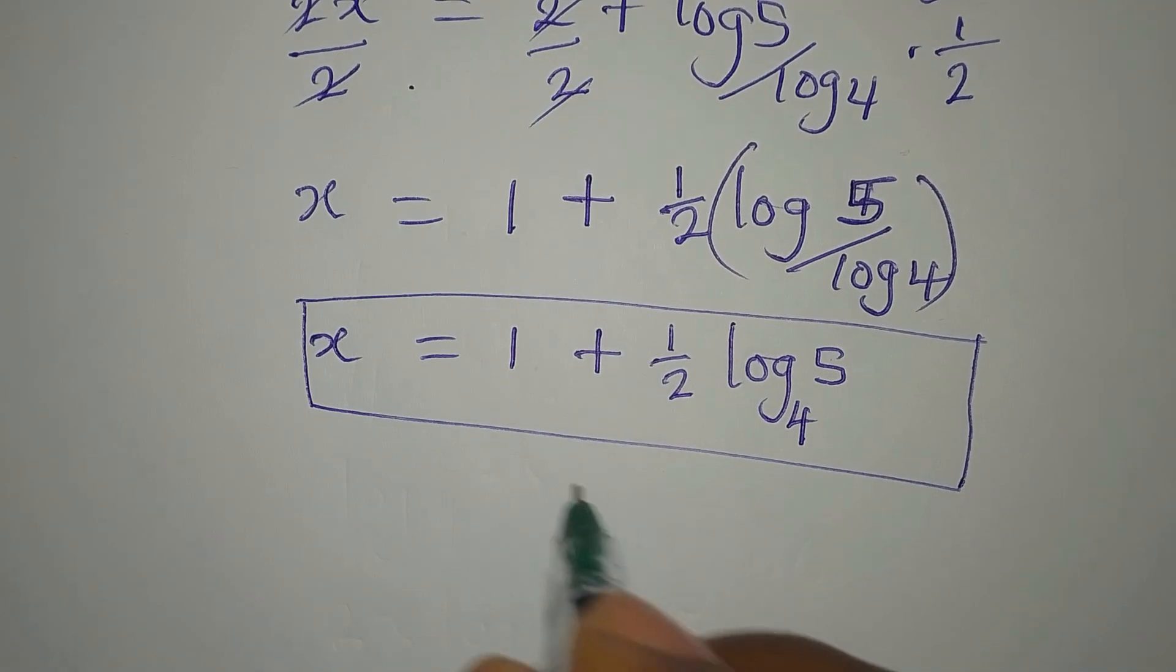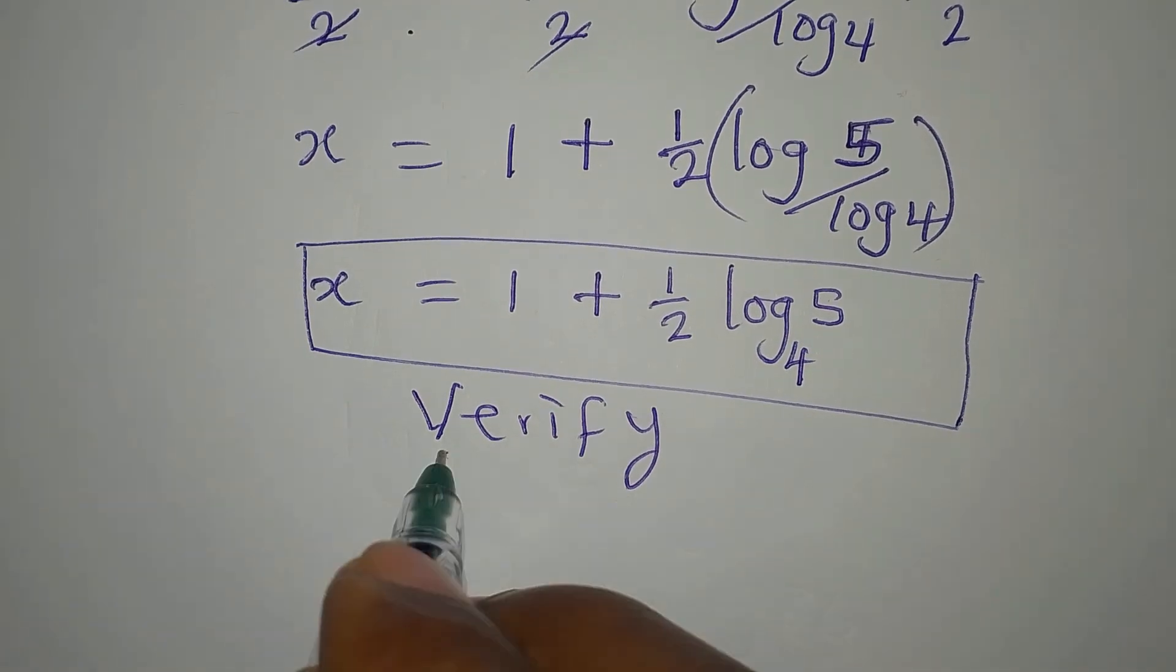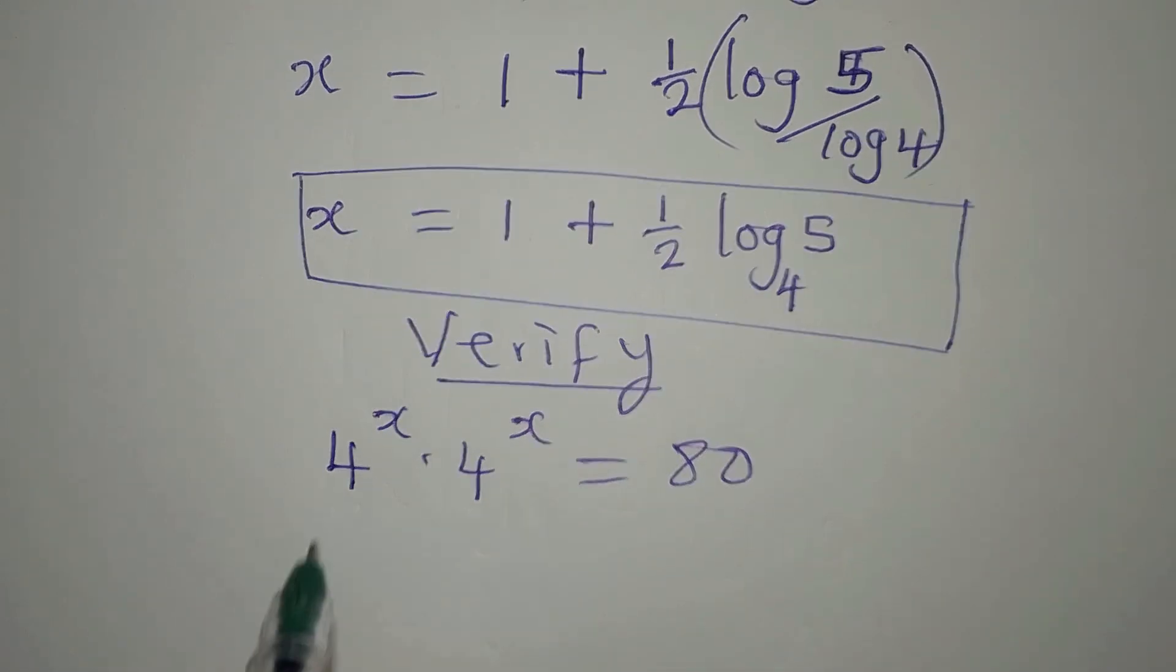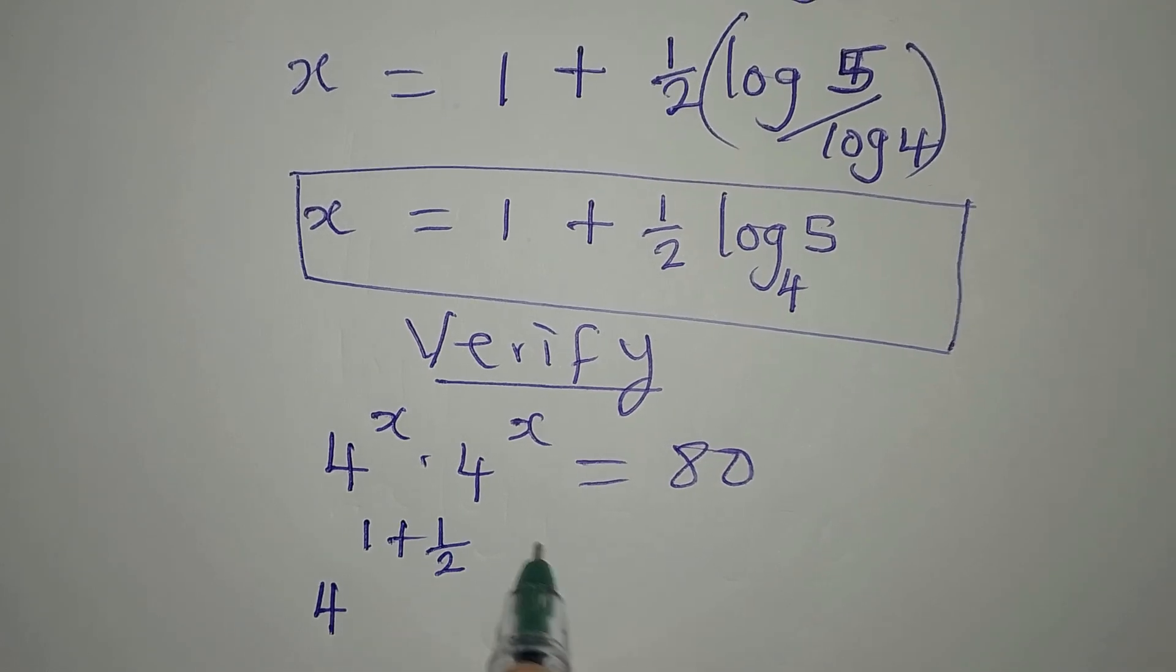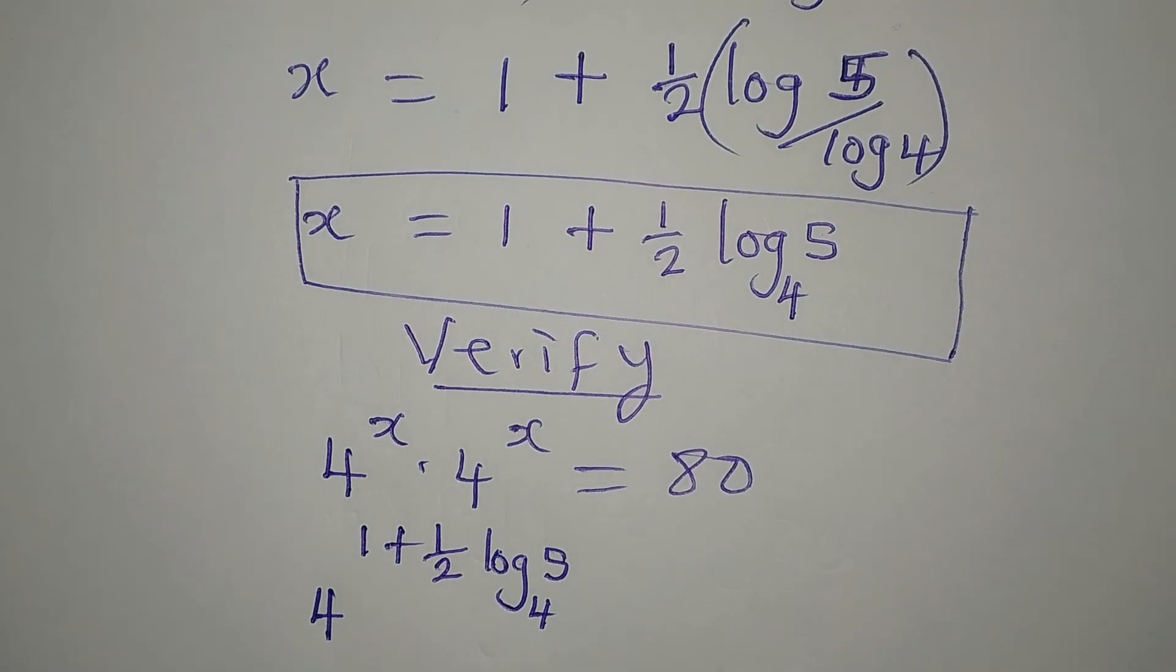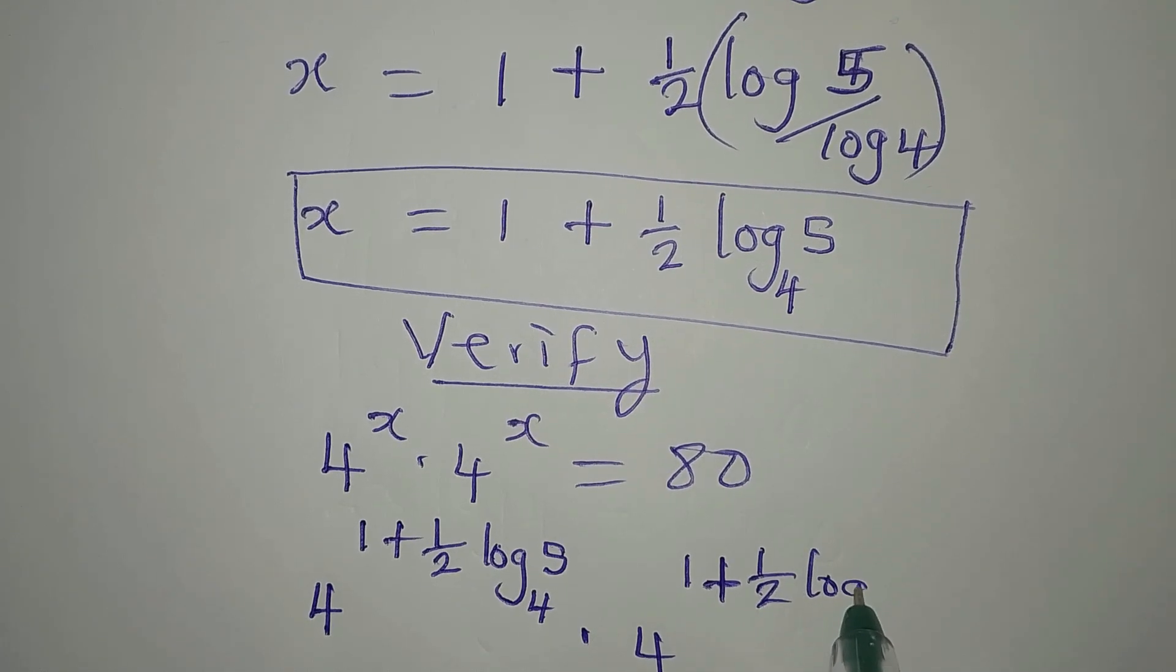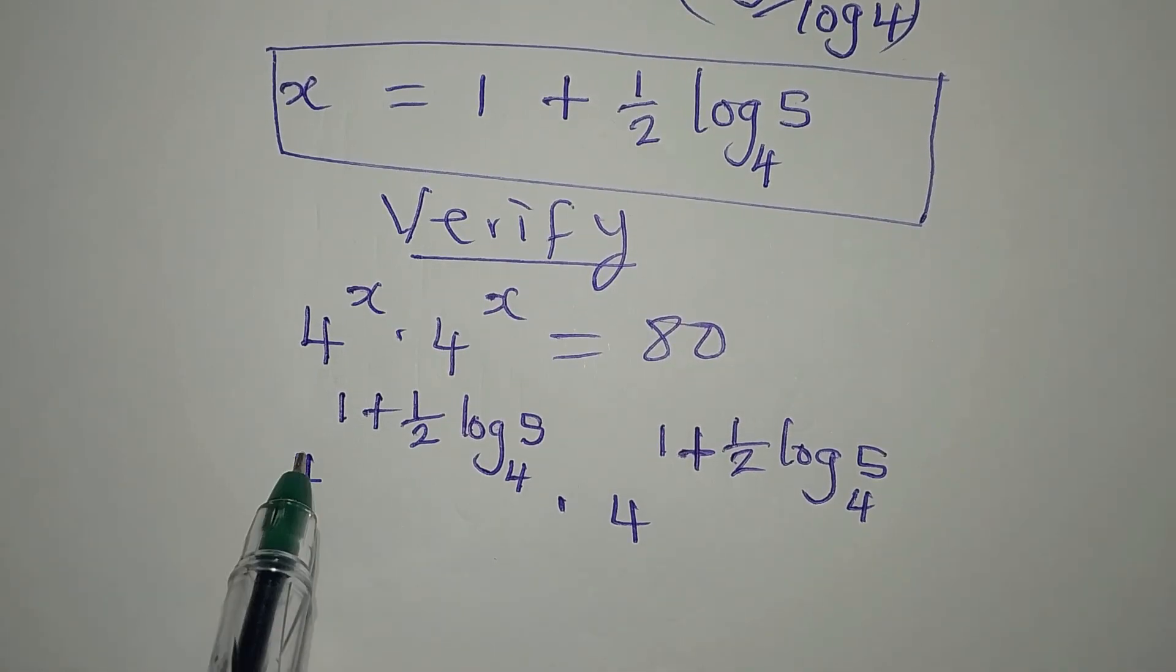But like we always do, we verify our solution. The equation was 4 to the power of x times 4 to the power of x equals 80. So that means we have 4 to the power of 1 plus 1 over 2 log 5 to base 4, times 4 to the power of 1 plus 1 over 2 log 5 to base 4. So the question is, will this give us 80? That's all we want to know.